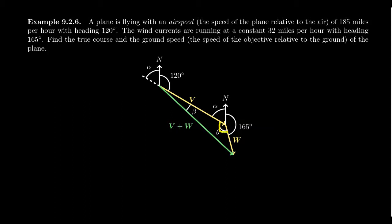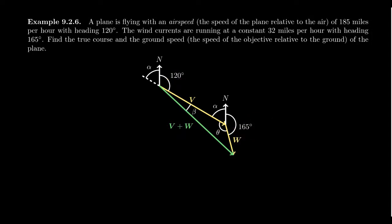The angle between vector V and V plus W is beta, and we also have angles alpha and theta in the diagram. Alpha is defined to be the supplement of the 120-degree heading of the airplane. Therefore, alpha equals 180 minus 120, which gives us alpha equals 60 degrees.